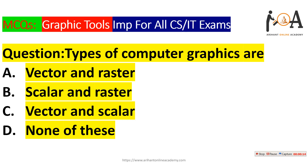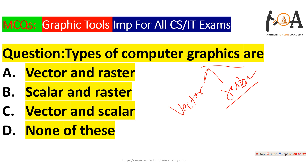The very first question is: types of computer graphics are? So we are asked what are the types of computer graphics. There are two types of computer graphics basically — vector graphics and raster graphics.